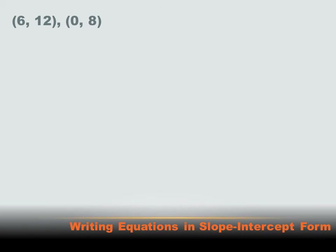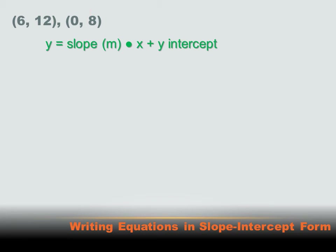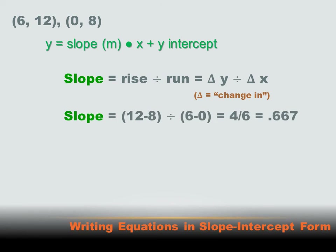Actually, I don't even need a line to figure out the equation — if I have the coordinates of two points on the line, I can figure out the equation. For instance, if I knew that (0, 8) and (6, 12) were on the line, I could figure out the slope: it's the difference in the y-values divided by the difference in the x-values — so 12 minus 8 divided by 6 minus 0, which equals 4 over 6, or 0.667.